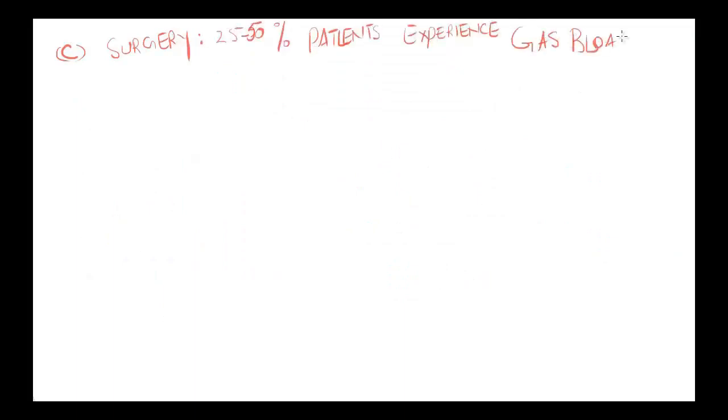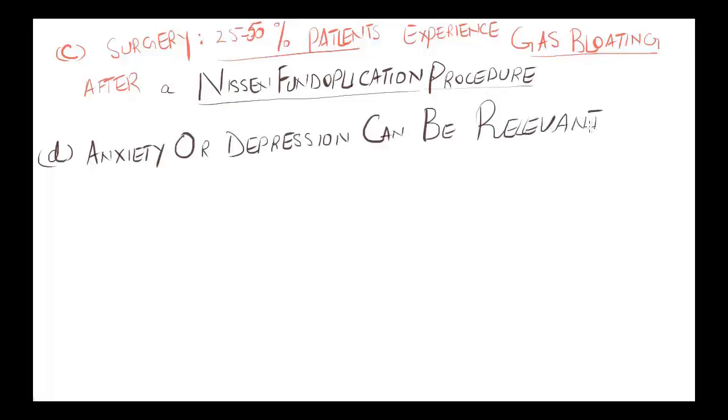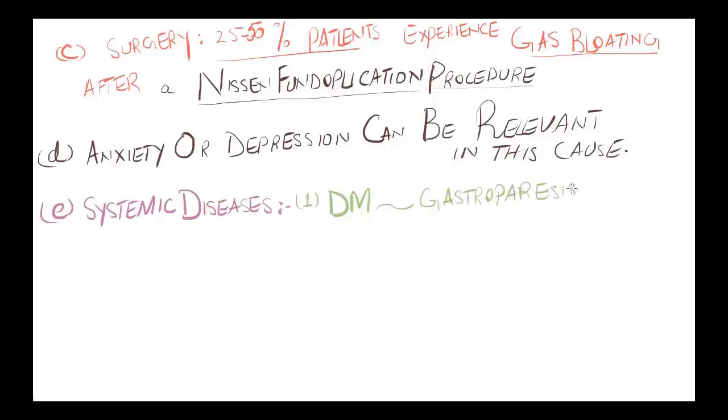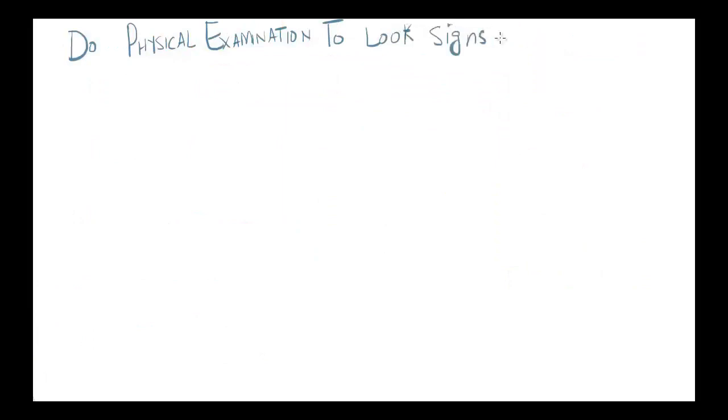Surgical history is very important, as 25 to 50 percent of patients experience gas bloating after a Nissen fundoplication procedure. Psychiatric history is also relevant; anxiety and depression can contribute to this condition. Systemic diseases like diabetes mellitus can cause gastroparesis due to autonomic neuropathy. In scleroderma, altered motility occurs due to neuromuscular dysfunction. Muscular dystrophy and hypothyroidism can also be important causes.